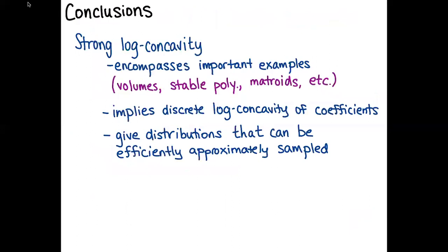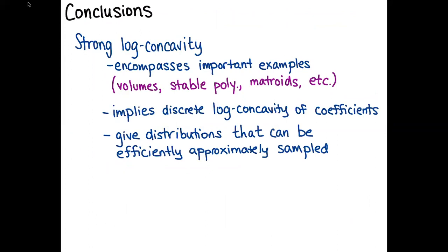In conclusion: strong log-concavity includes important examples like volume polynomials, stable polynomials, and polynomials associated to matroids. It implies discrete log-concavity of polynomial coefficients and gives distributions that can be efficiently approximately sampled using Markov chains that reach their stationary distribution quickly. Thank you for your attention.